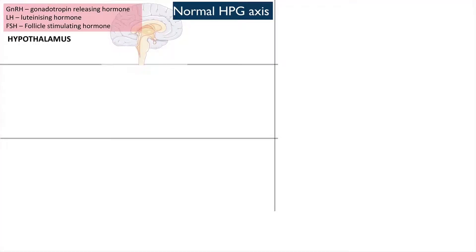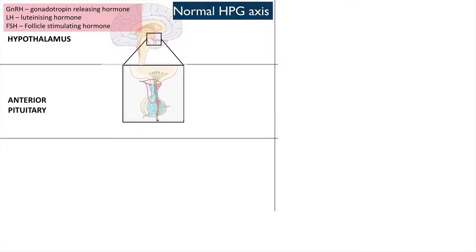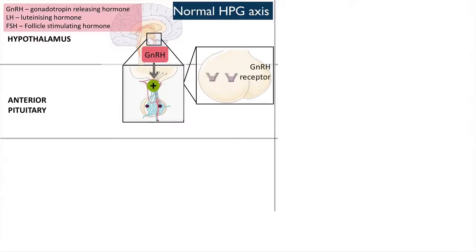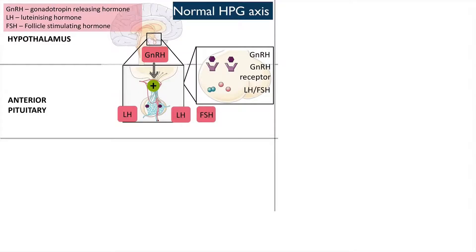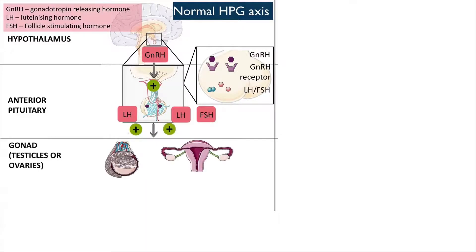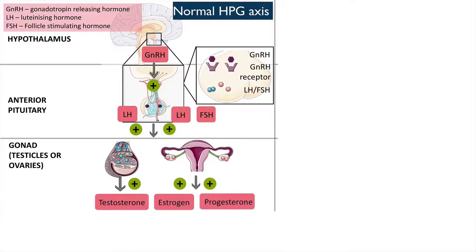The hypothalamus produces gonadotropin-releasing hormone, or GnRH, which stimulates the anterior pituitary to produce luteinizing hormone, or LH, as well as follicle-stimulating hormone, or FSH. This then stimulates the development of the follicles in the gonads. These follicles release sex hormones, such as estrogen and testosterone.